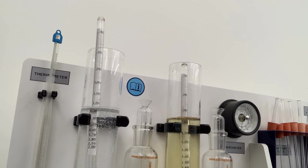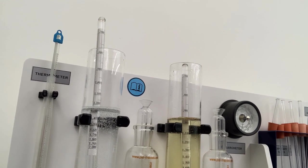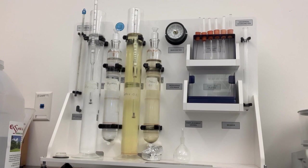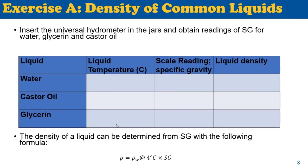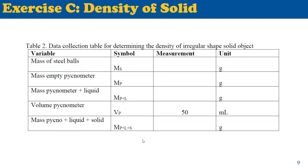You should take three different measurements and average them. Also, do not forget to take temperature measurements. Once you've found the specific gravity from the hydrometer, multiply by the density of water at 4 degrees Celsius — 1000 kg/m³ — to find the density of castor oil and glycerin. In the next stage, we need to find the density of the solid, which in this case is different diameter stainless steel spheres.